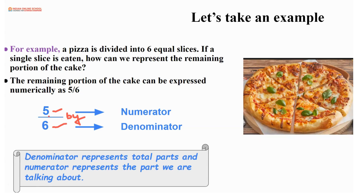The number at the top is read first, then the term 'by,' then the bottom number. The number written at the top is called the numerator — N-U-M-E-R-A-T-O-R. And the one below is called the denominator — D-E-N-O-M-I-N-A-T-O-R. A fraction is made up of two parts: the numerator on top and the denominator below.